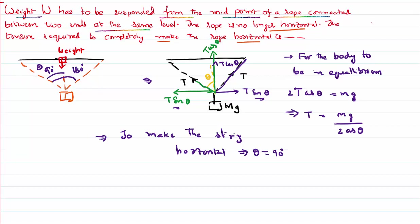Substitute that 90 degrees in this case, in the equation that we have. This implies T will become Mg by 2 cos 90. But you know cos 90 is 0. So it is nothing but Mg by 0. You know that anything by 0 is nothing but equal to infinity. That means to make it horizontal, we need infinite tension.